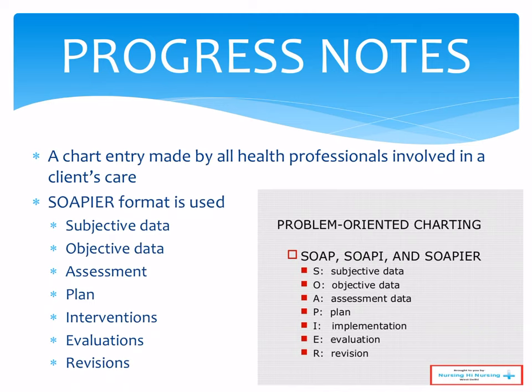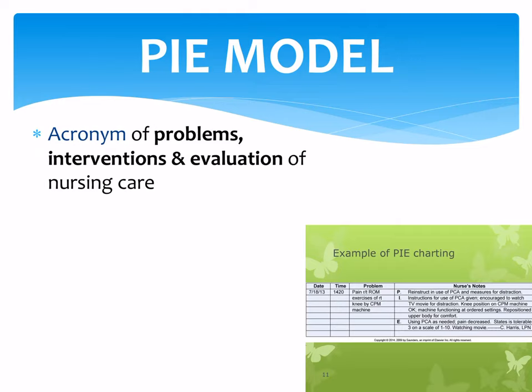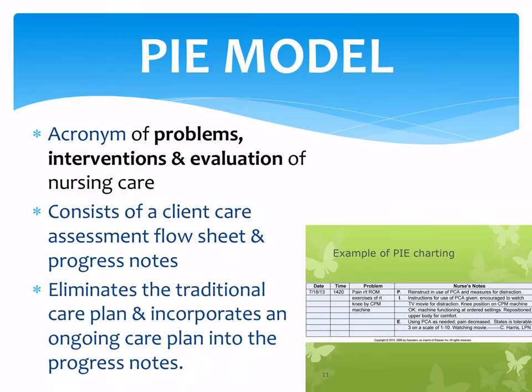We also have the PIE model documentation system. PIE stands for: P — problems, I — intervention, E — evaluation of nursing care. It consists of a client care assessment flow sheet and progress notes. It eliminates the additional care plan and incorporates an ongoing care plan into the progress notes. You start by identifying the problem, then design and implement interventions, and finally evaluate the nursing care.